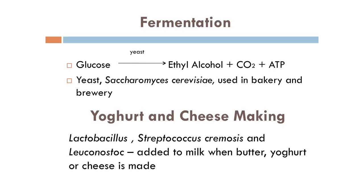Understanding fermentation first: fermentation is the process where glucose is converted to ethyl alcohol releasing CO2 and it is an energy yielding process. This is done by the yeast — it is a fungi and the name of the yeast that is commonly used is Saccharomyces cerevisiae. Because it is used in both baking as well as brewing, we call it baker's yeast as well as brewer's yeast. It is used in baking to prepare cakes and breads, and we can also prepare alcoholic beverages for example wine using yeast.